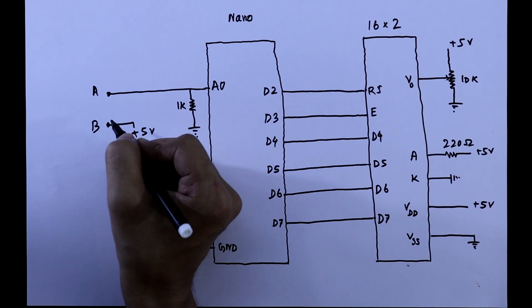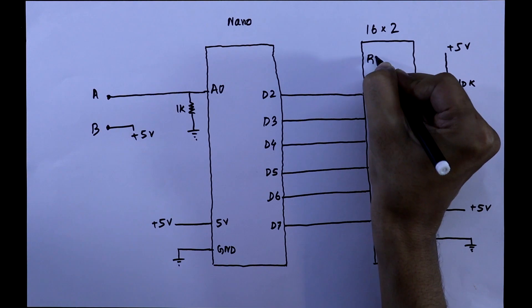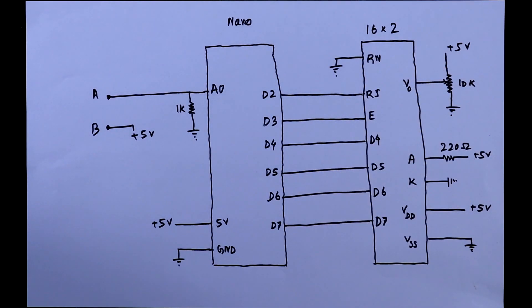Here we will connect the resistor to find out its value. And the RW pin of the display is connected to the ground. This is a very simple connection. Now we will see this on practical.